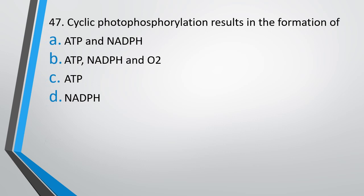Question number 47. Cyclic photophosphorylation results in the formation of: ATP and NADPH, ATP, NADPH and oxygen, ATP, NADPH. Cyclic photophosphorylation results in the formation of. Correct answer is option C. It results in formation of ATP.